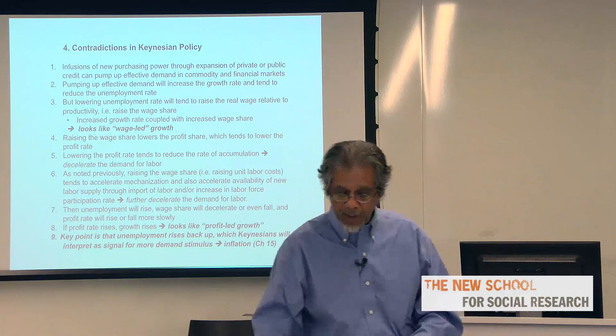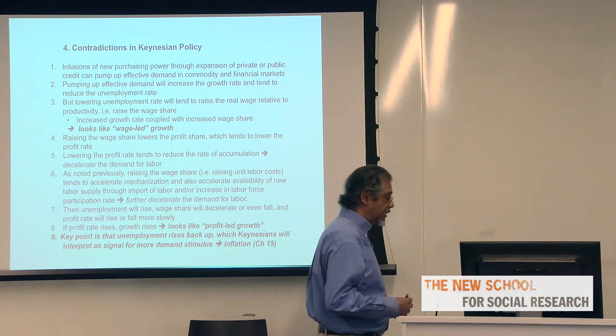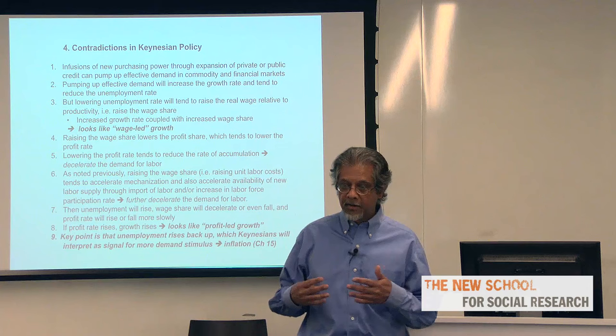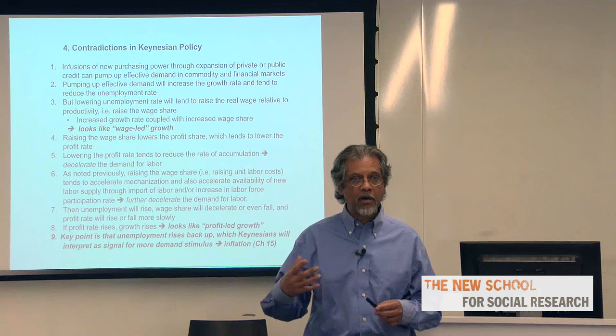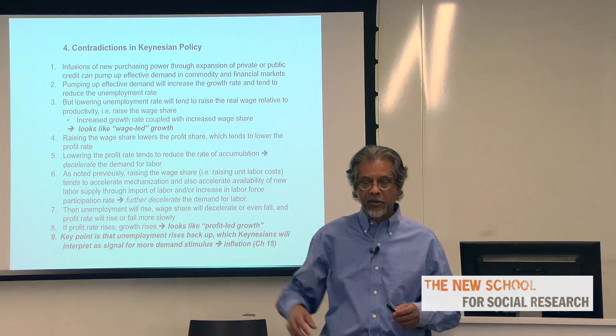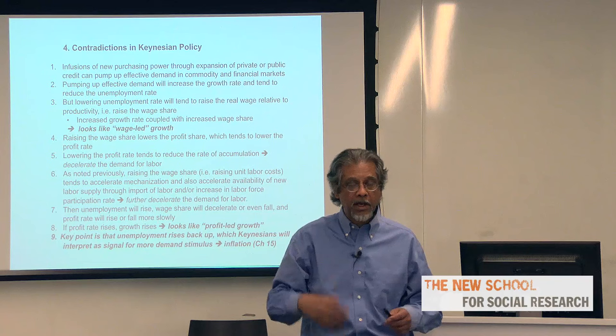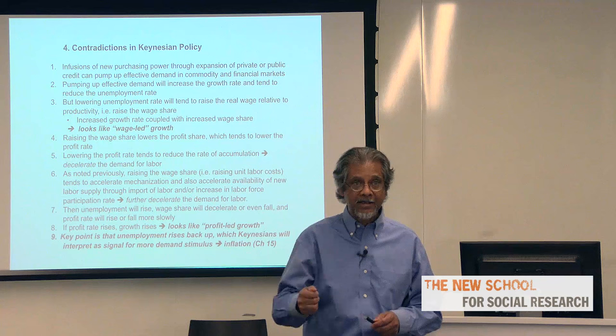Keynesian policy will discover that the stimulus was temporary because the unemployment rate starts to come back up. If you're Keynesian and believe the unemployment rate is essentially neutral — can be put anywhere you want — the only reasonable response is to increase the stimulus again. But you're pushing on a system weakened from the point of view of profitability, so you're likely to have more of the same problem. One of the fundamental flaws in the Keynesian argument is that it forgets to look at the effects of positive stimulus on profitability. The actual profit rate can rise temporarily through higher capacity utilization, but investment then accelerates to bring capacity utilization back down to normal.